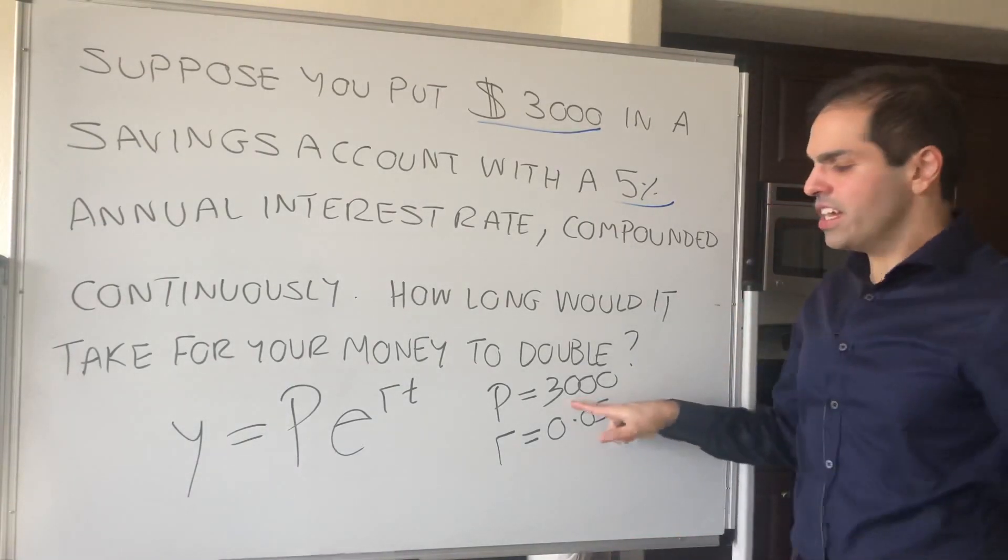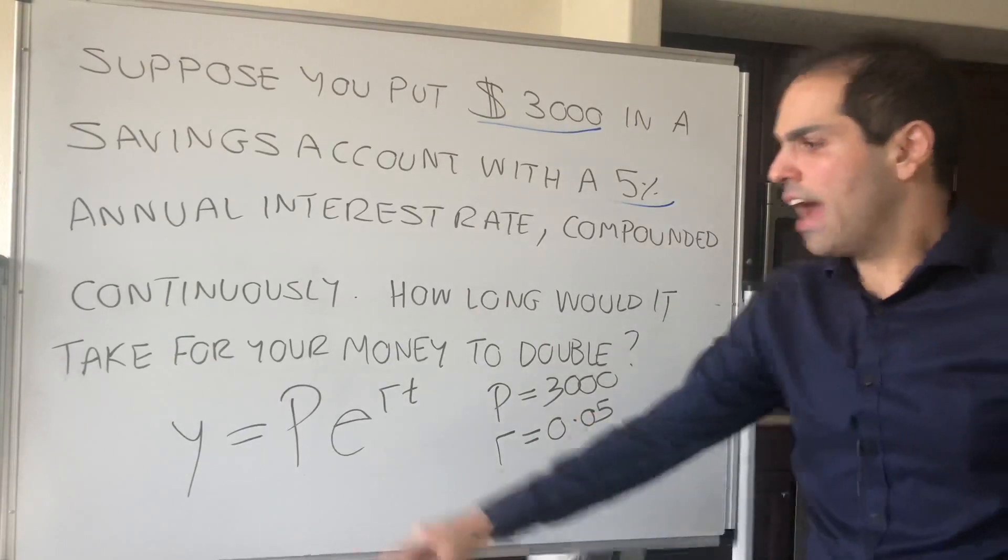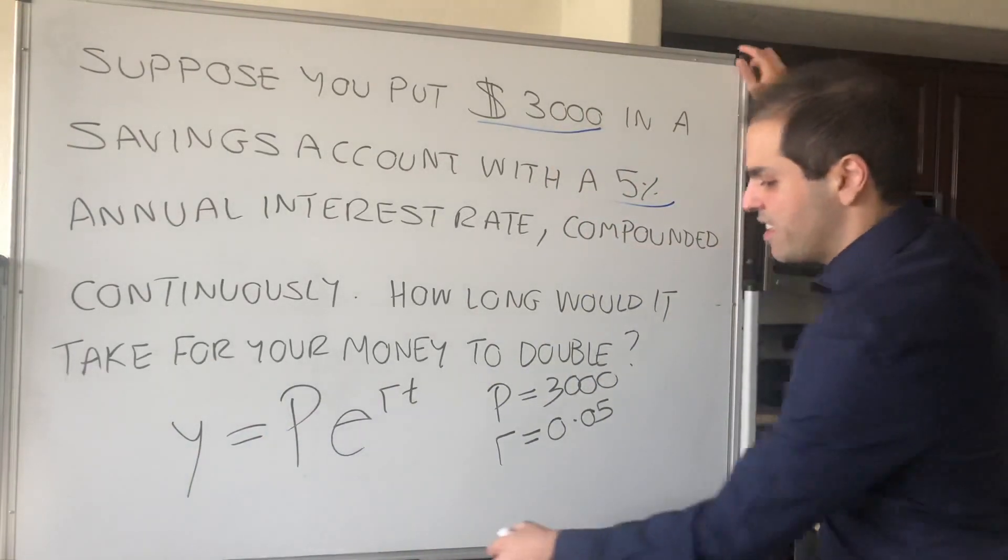So in particular, we started with $3,000. Ideally, we want to get double that, so $6,000.